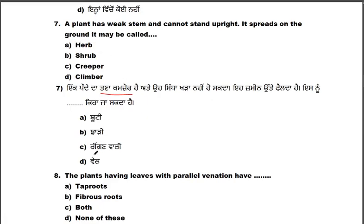A climber is a plant that cannot stand upright on its own. If you see such a plant, even as a tree, it cannot stand upright. It spreads on the ground.